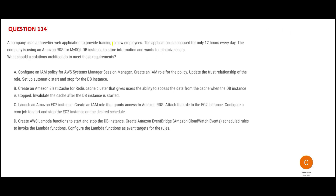The next question: there is a training application that runs 12 hours a day. It is a three-tier application that uses RDS for the database, and it wants to minimize costs. So everything is about saving cost. The options discuss automatic start and stop of the database — meaning after the 12-hour window, stop the database to save cost.